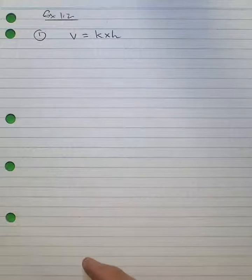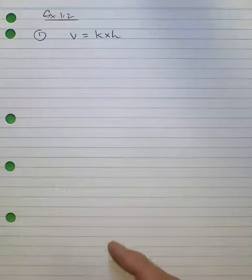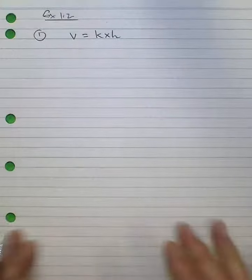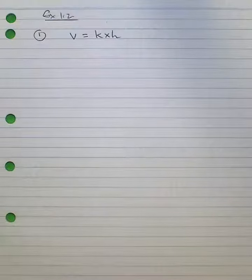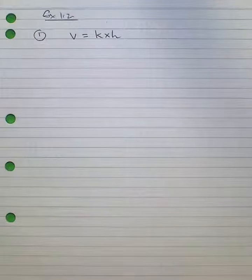In the first question of exercise 1.2, you're looking at linear related variables. Now in the first problem, you're told the volume of the cone of fixed base is directly proportional to the height.